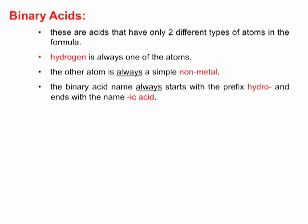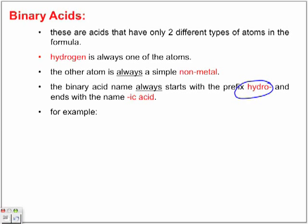Now the binary acid name always starts with the prefix hydro. So we're going to add the word hydro to the name of the following binary acids. Hydro represents the hydrogen aspect of it.